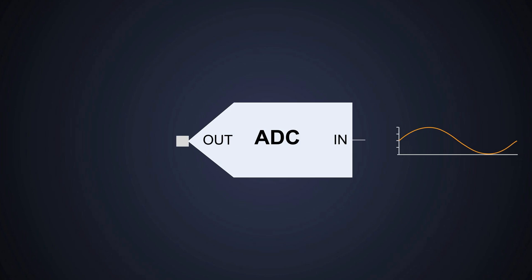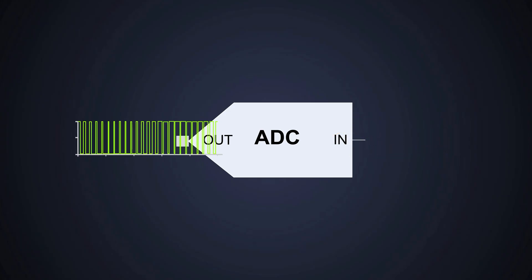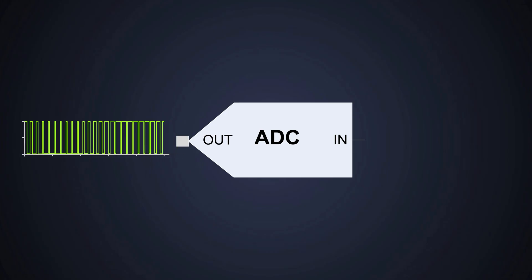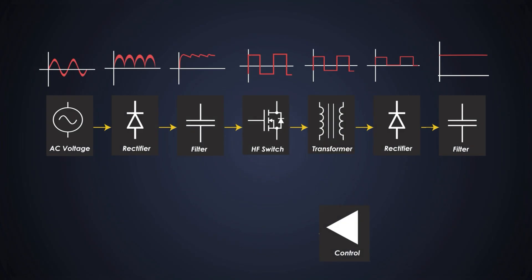This PWM generator is extensively used in analog to digital converters with PWM conversion, where it converts analog signals to PWM for further processing or digital transmission.